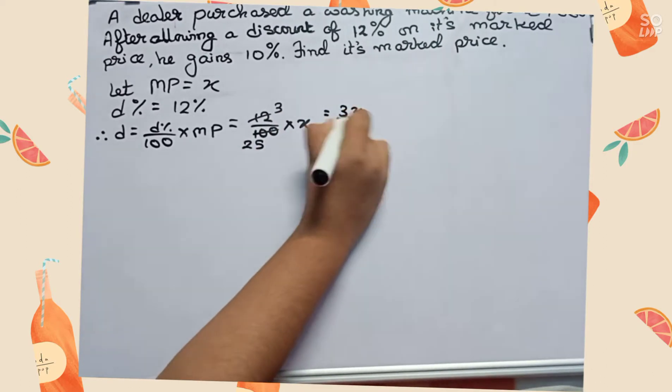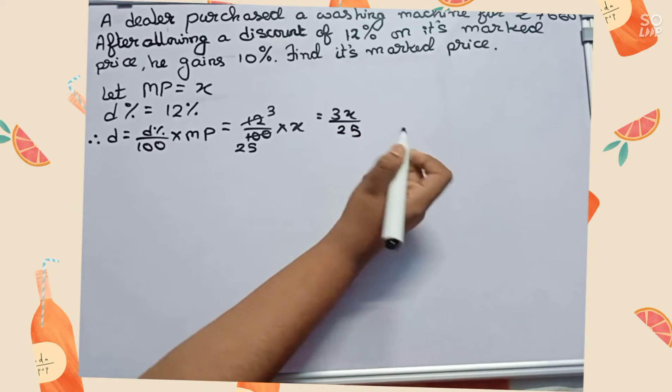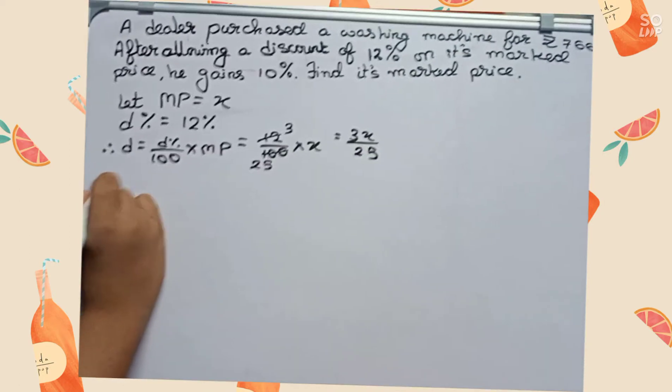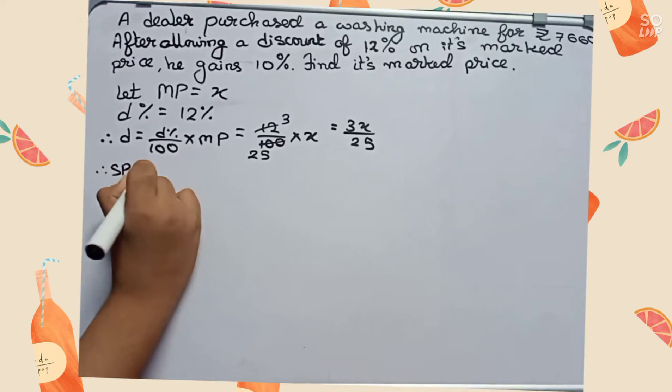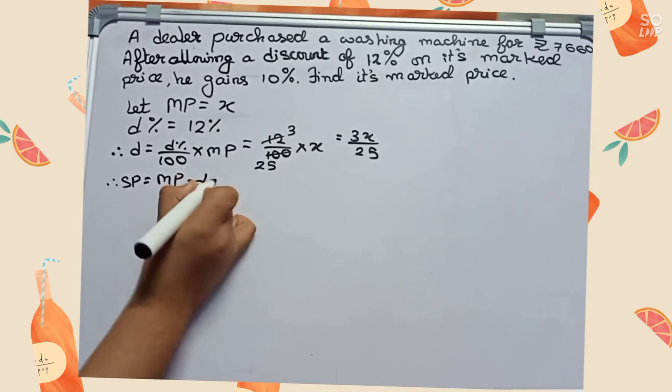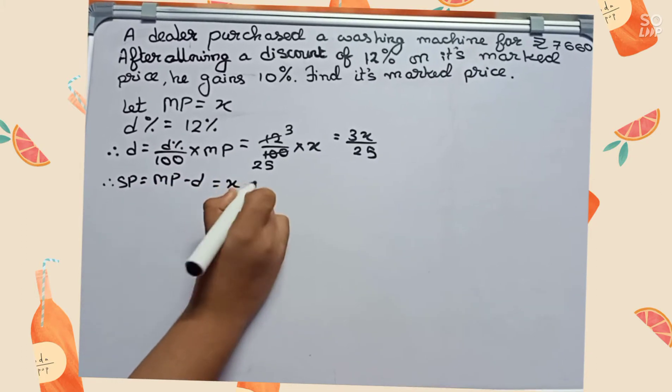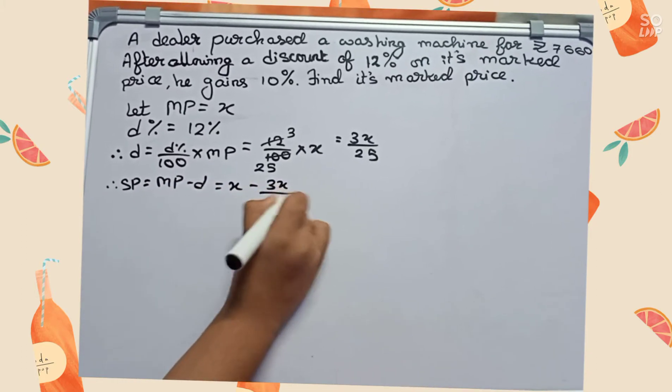This gives us 3x by 25. Now I will find SP. Therefore, SP equals MP minus discount, which equals x minus 3x by 25.